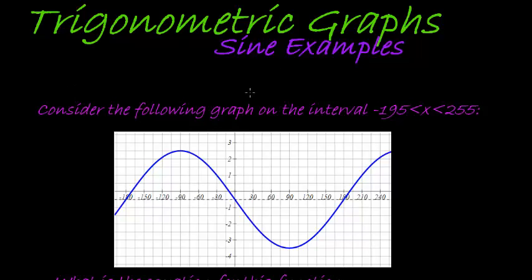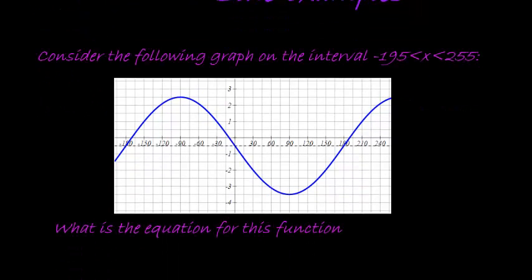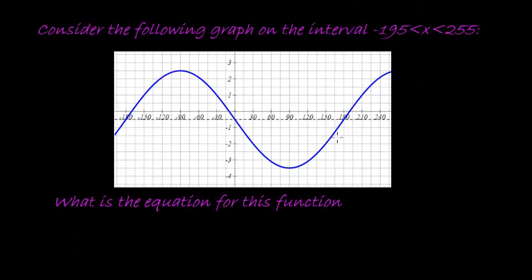Hello again to another example of the sine graph. Consider the following graph on the interval negative 195 to 255. Here you see they give us the graph and they ask us what is the equation for this function. You should recognize that this is y equals sine x. This is a sine graph. But it might have been modified. As a matter of fact, it has been modified.